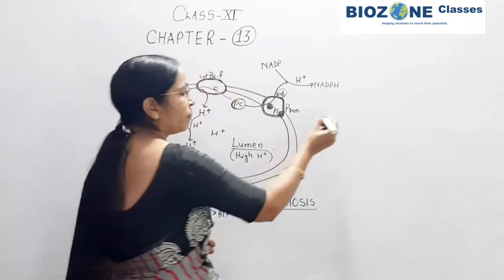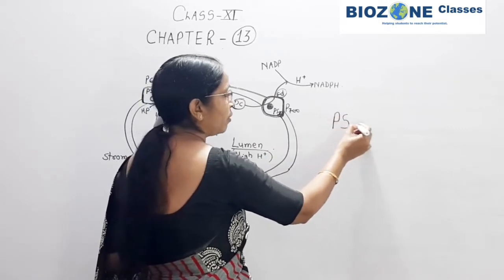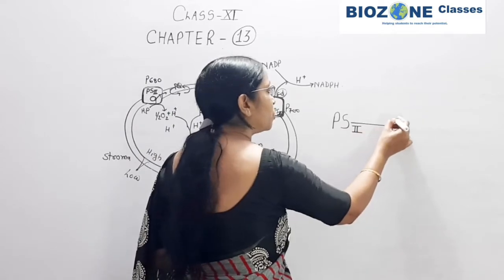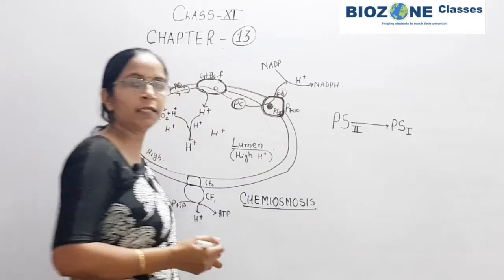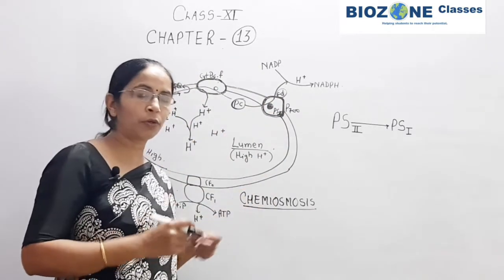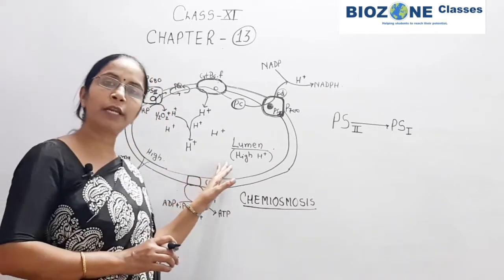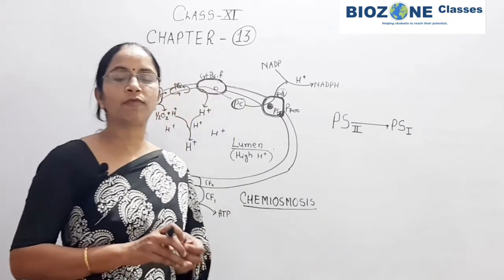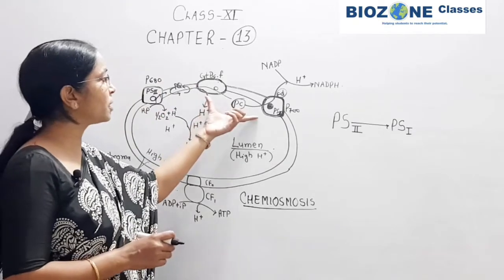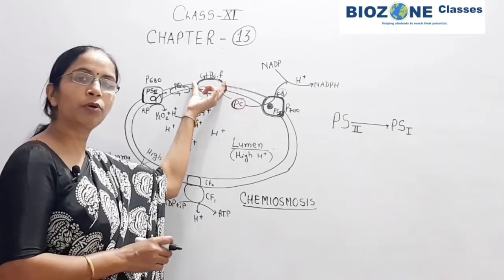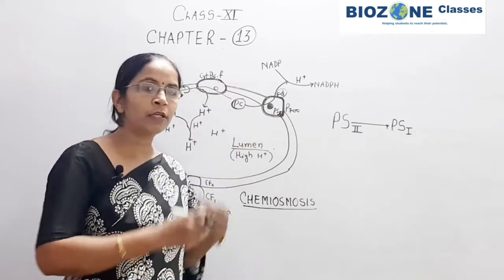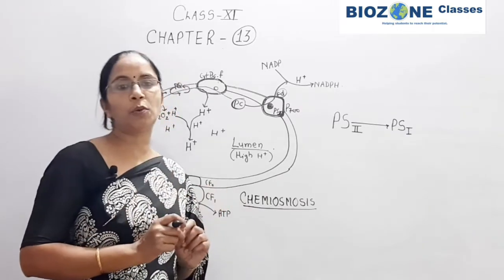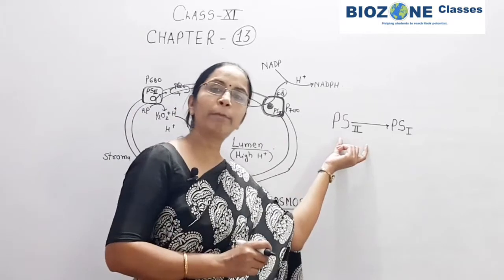Always remember the electron flow whenever it begins in the lamellae of the chloroplast — electron transport takes place from PS2 towards PS1. This is one of the most important diagrams; if you go through last year's question papers, one question is asked for the transport of electrons from cytochrome B6F towards plastocyanin. The flow of electrons during chemiosmosis is only clear when you clearly know about PS2 and PS1.